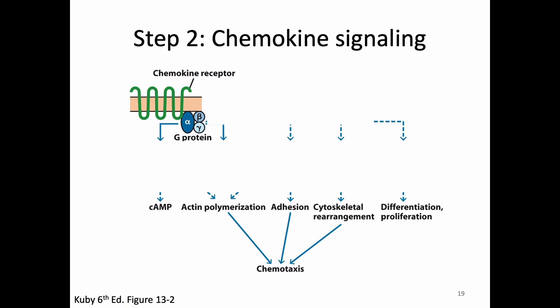All chemokine receptors have seven transmembrane domains. Chemokine receptors are seven-transmembrane-domain-spanning proteins that are G protein-coupled receptors. They can lead to a number of different signaling events. The details are complex, but the moral of the story is they lead to things like changes in cytoskeleton, changes in how sticky the cell is, and other things that help the cell undergo chemotaxis — all through a G protein-coupled receptor.